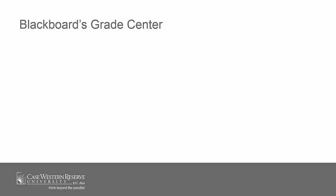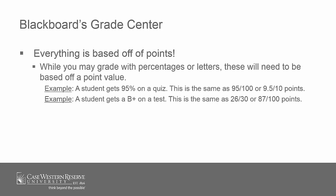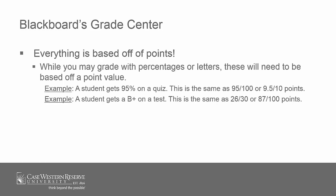But before we can get to creating columns, you'll first need to know a bit about how Blackboard's Grade Center works. First and foremost, Blackboard works on a points-based system. This means that every grade entered in the system comes down to points, even if you grade on a letter or percentage scale. This is important when it comes to setting up your columns, which require a point value.